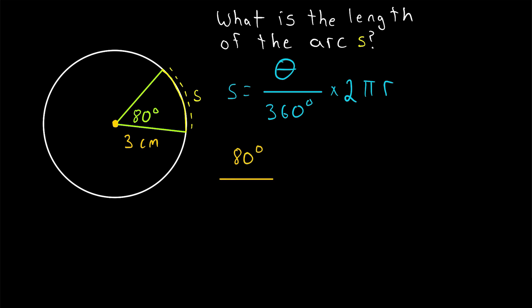Divide that by the total degree measure of the circle to find the portion of the circle that our angle is cutting, and then multiply by the circumference, which is 2 pi times the radius. In this case, the radius is 3 centimeters. And this will give us our arc length, S.